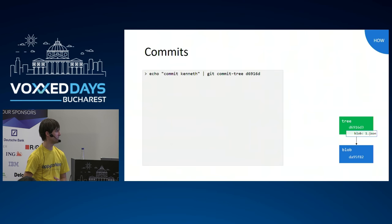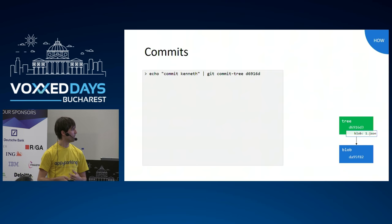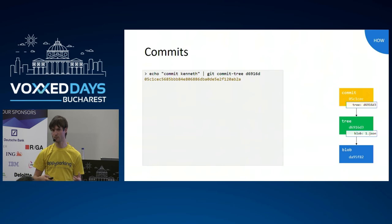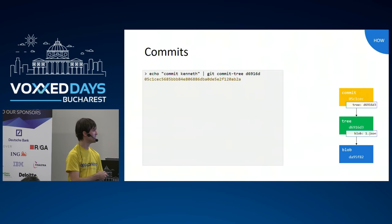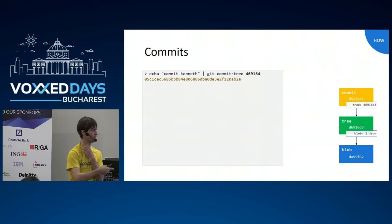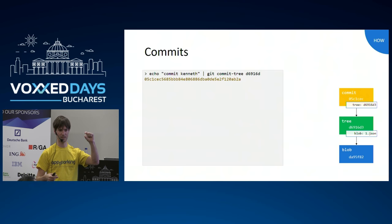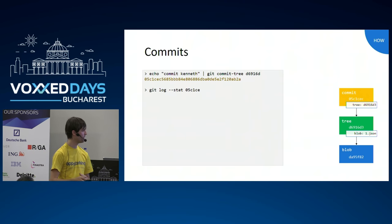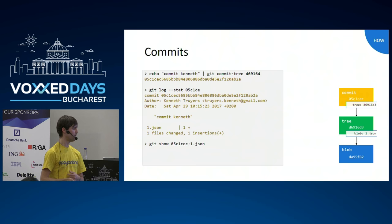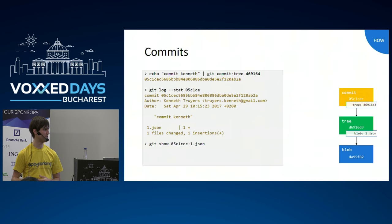The next level up is commits. I echo a commit message and pass that into commit-tree, passing in the tree I want to commit, and that gives me back the commit hash — the same one you've seen in UI tools or on the command line. At this point I have a commit which points to a tree with one file. I can do a git log on that and see that I've added 1.json with that commit message, and I can retrieve the contents of 1.json for that commit.